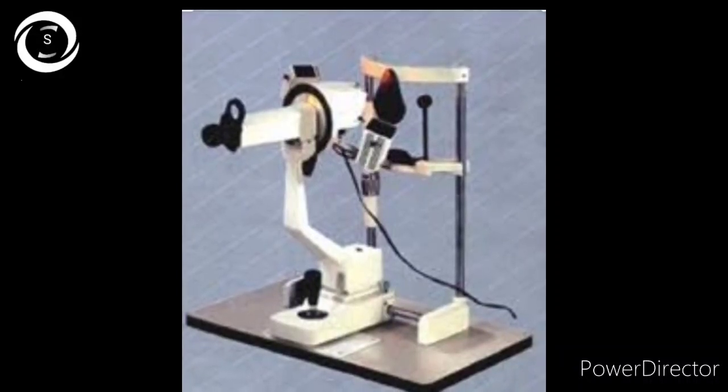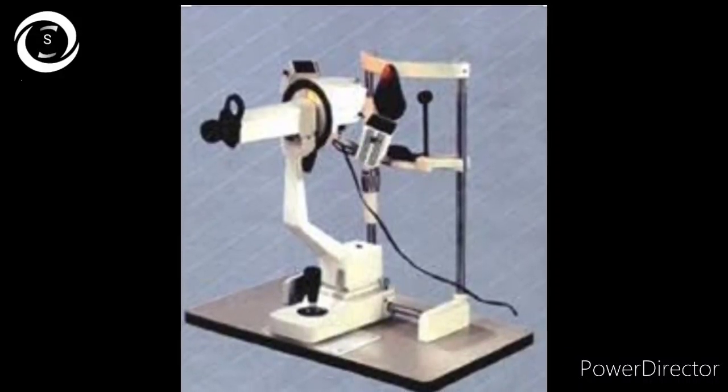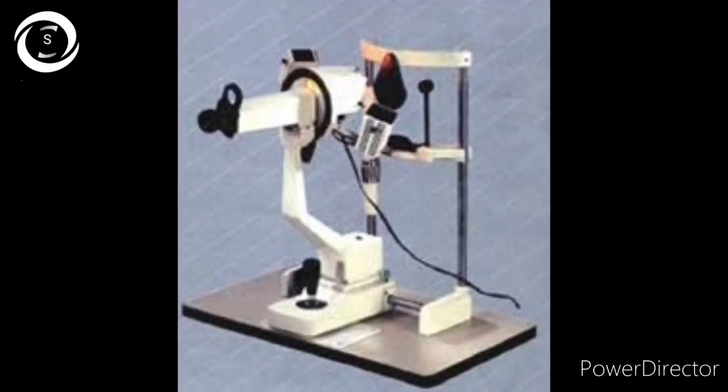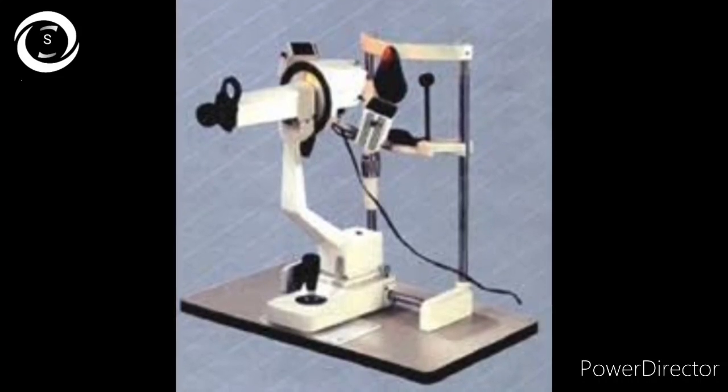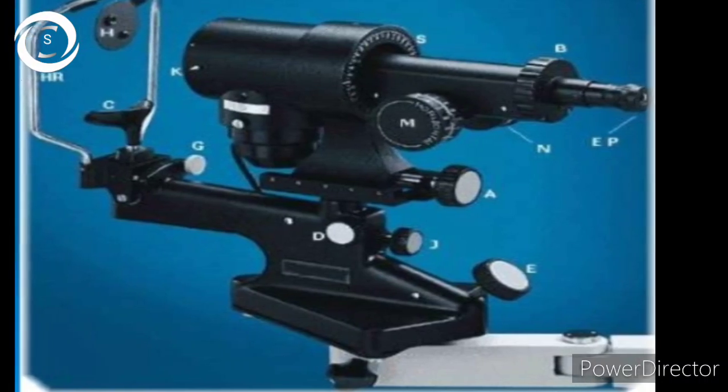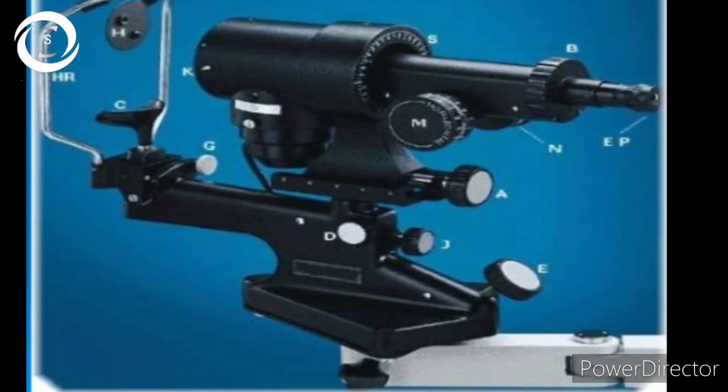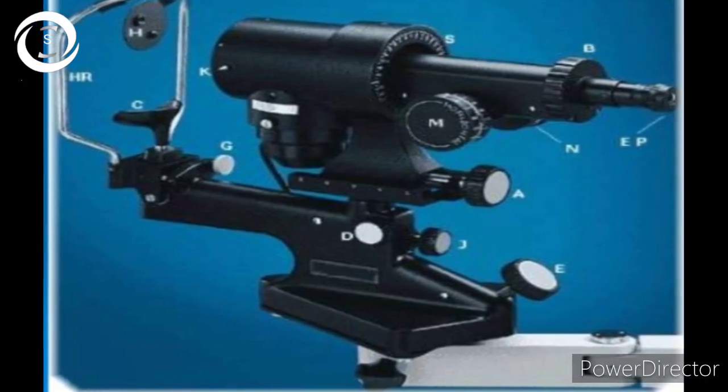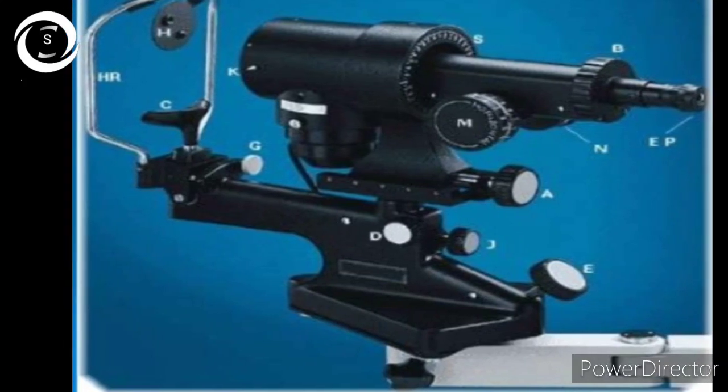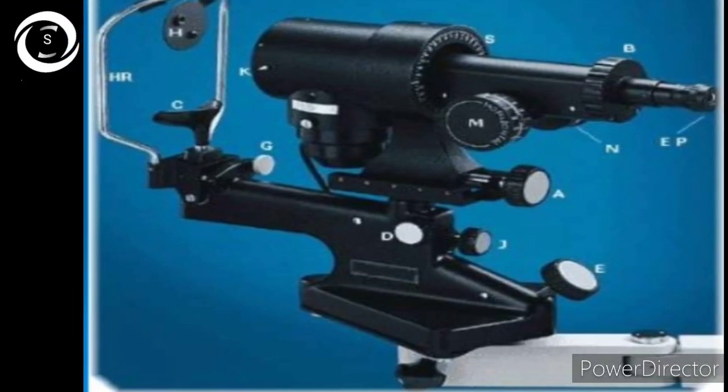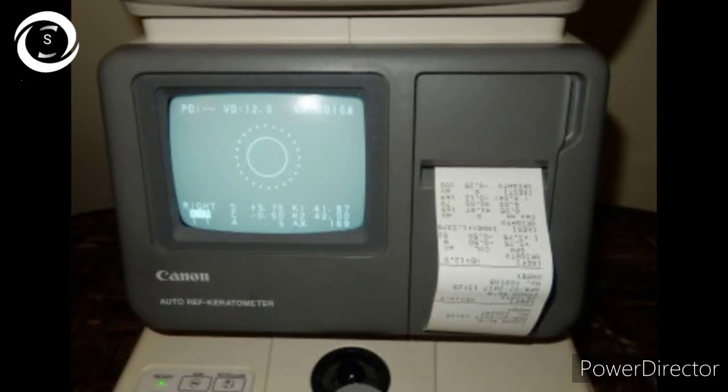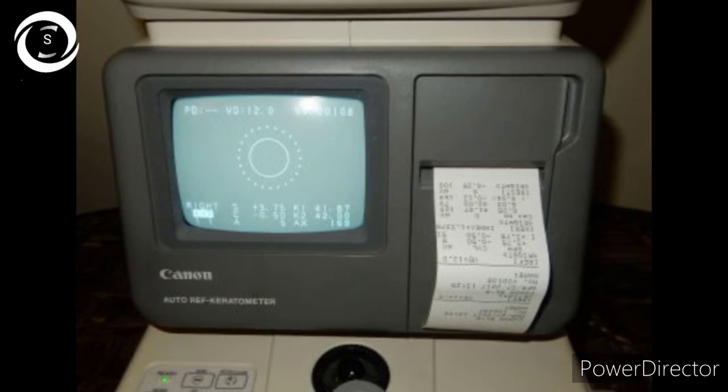In this second video of the corneal topography series, we will discuss keratometry. Kerato means cornea and metri means measurement, so measuring the power or curvature of the anterior surface of the cornea, usually within a 2 to 4 millimeter optical zone, is called keratometry. You can see different keratometers in the background. It is expressed in diopters or millimeters. Instruments used to measure keratometry are called keratometers or ophthalmometers.